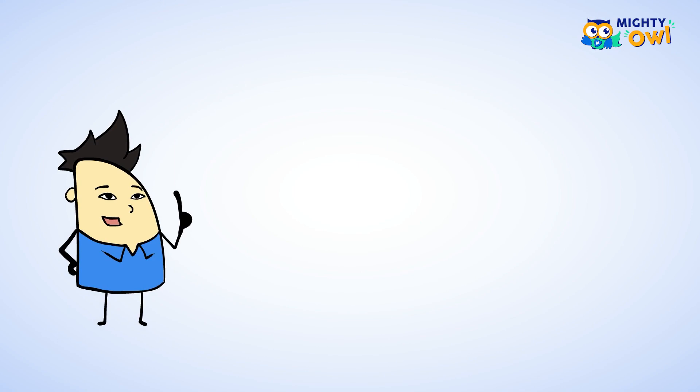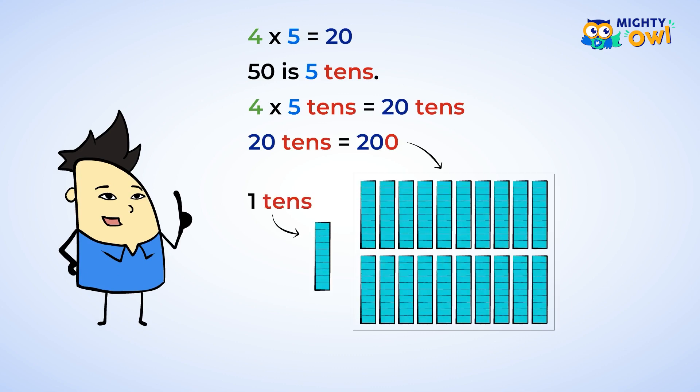But why does it work? Well when you multiplied four times five, you got twenty. The fifty is really five tens. So four times five tens equals twenty tens, which is the same thing as two hundred.